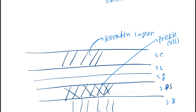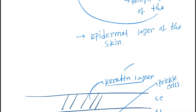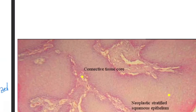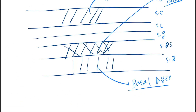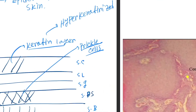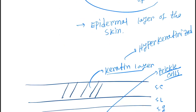The histopathological features are based upon three features: the basal layer, the keratin layer, and the prickle cells. In histopathology, the keratin layer will be hyperkeratinized, the basal layer will be proliferated, and the prickle cell outer layer will be more thick.